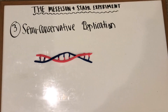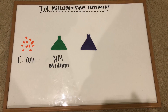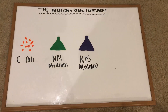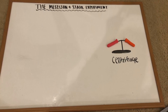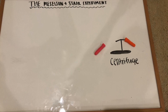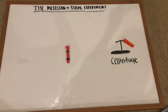In order to test which of these three hypotheses were true for DNA, Meselson and Stahl completed an experiment involving E. coli, a nitrogen-14 medium, a nitrogen-15 medium, and a centrifuge. The reason they used a centrifuge is because the high-speed rotation would cause the DNA containing the heavier N-15 to sink to the bottom of the test tube and the lighter N-14 to float to the top.